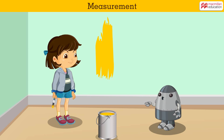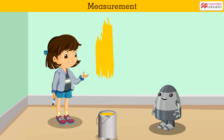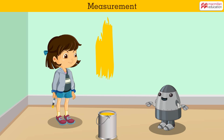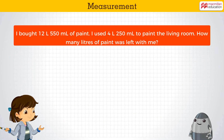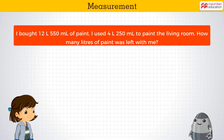Hi, Jasleen! What are you doing? Hey, Robo! I was painting the walls of this room. Oh, wow! But how many liters of paint did you buy? And how much will you need to paint this room? Let's find out with the help of a problem. I bought 12 liters and 550 ml of paint. I used 4 liters and 250 ml to paint the living room. How many liters of paint was left with me?